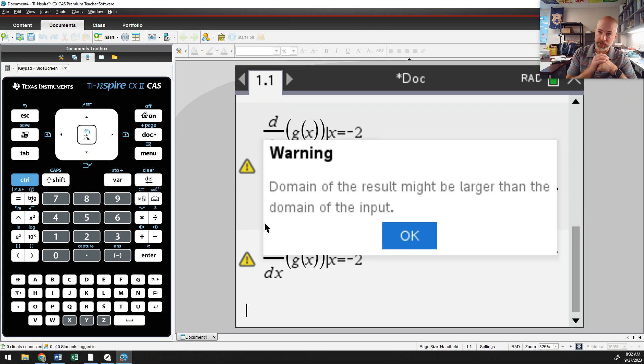The derivative of natural log x, however, is one over x, which has a domain of everything except zero that includes negatives. And there's a domain discrepancy between the natural log of x and its derivative. And they're just saying, be aware of that. That does not mean your answer is incorrect. You can trust your calculator.